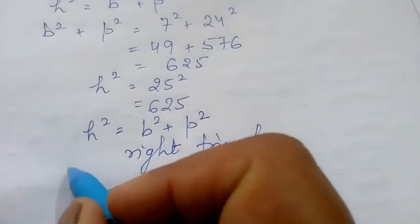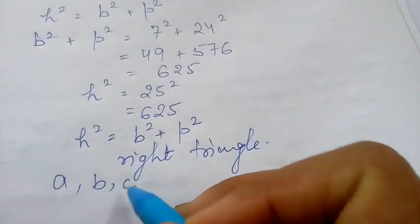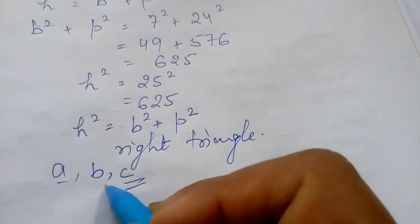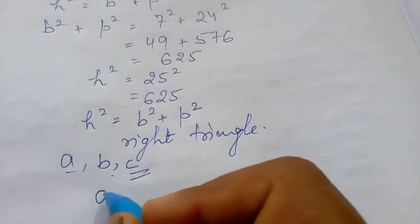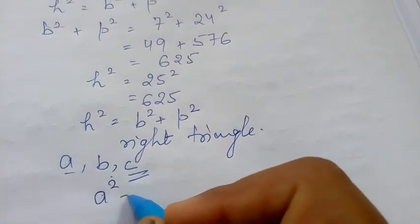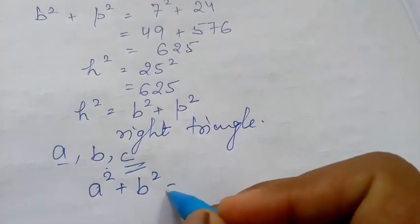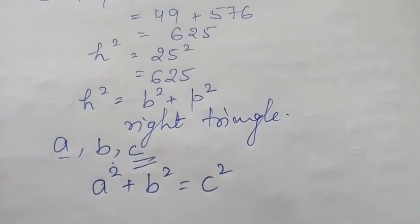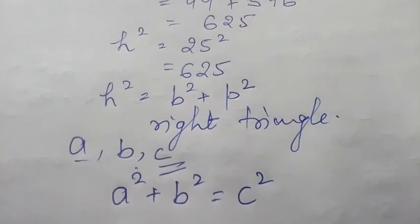You can take the sides A, B, and C, where C is the longest side and the other two sides are A and B. If the sum of the squares of the two shorter sides equals the square of the longest side, then the triangle is a right triangle.